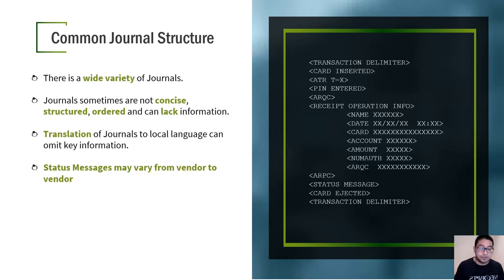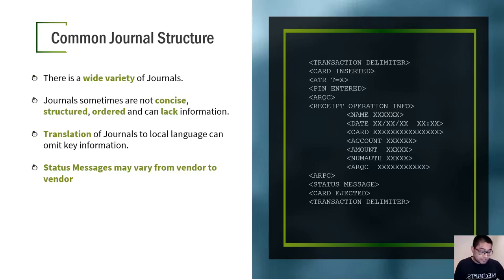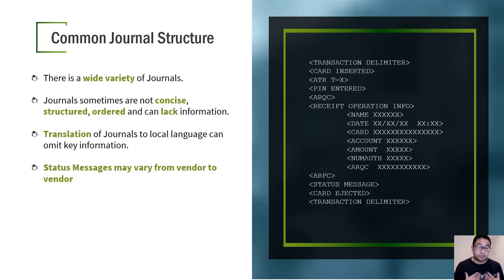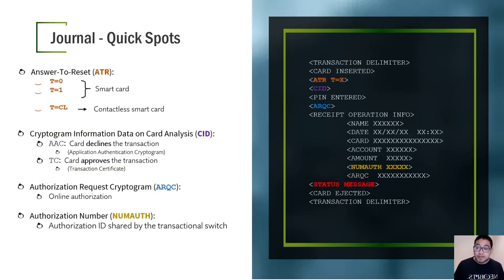A common problem I have seen in journals is translation. For example, in Mexico you find printed information in Spanish, in the US in English, and in China in Chinese. Sometimes the financial institution decides to keep only the normal human-readable fields in the journal — the dispense count, account, name — and strips out all the error codes and technical information that is critically needed when responding to an incident. These error codes are called status messages, they vary from vendor to vendor, and they are really important.